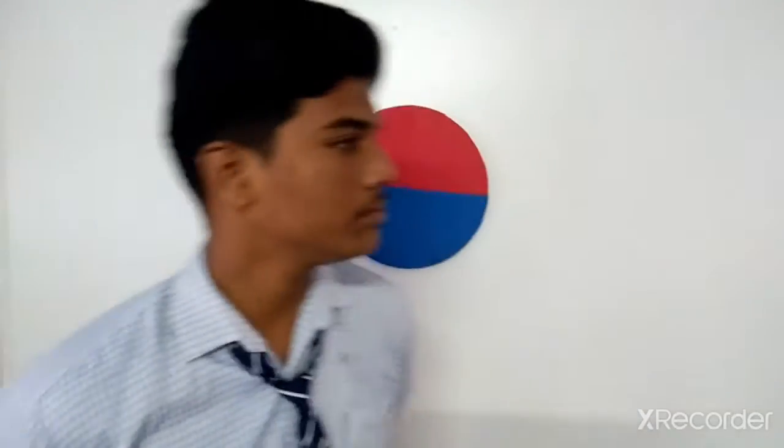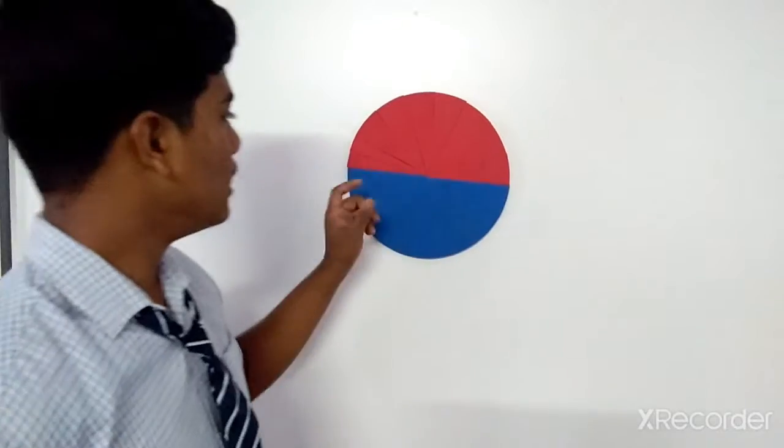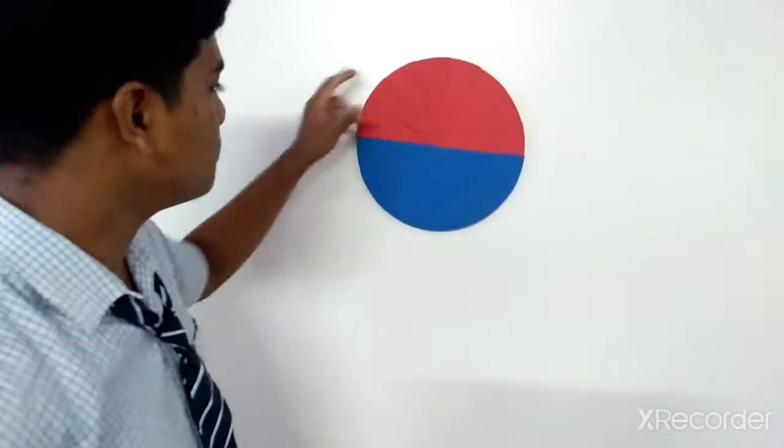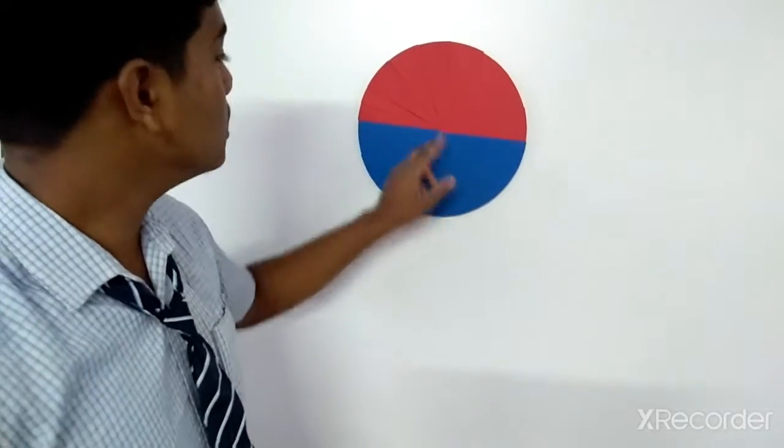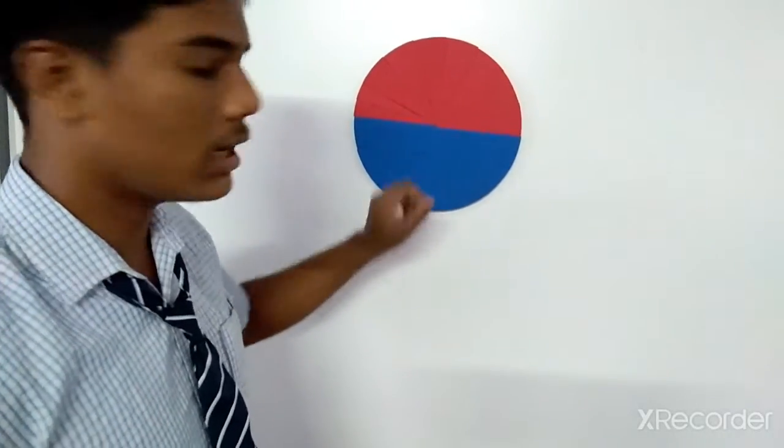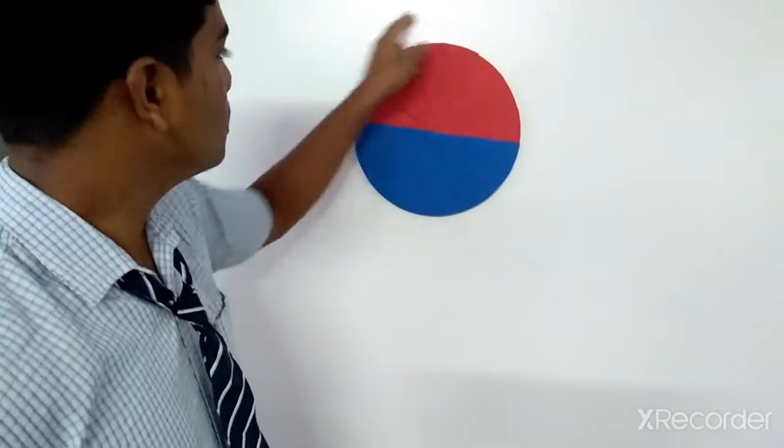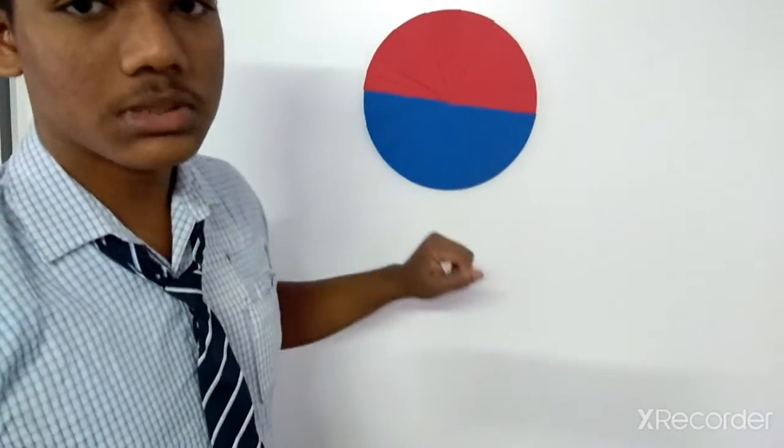Now come to my project, how to find area of circle. This is a circle having a center, this point to this point radius, this point to this point diameter of circle and this is the circumference of circle.